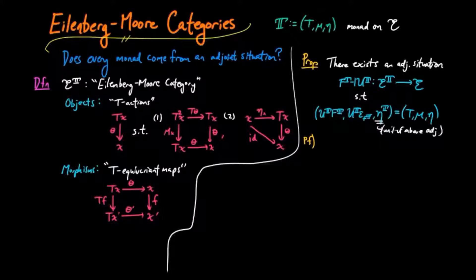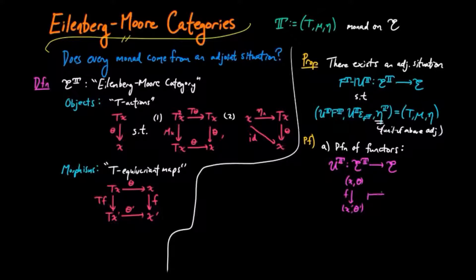Let's first define the functors U^t and F^t. U^t is going to be a functor from e^t to e. We take a t-equivariant map in the Eilenberg-Moore category from (x, theta) to (x', theta') and just forget the t-action. This is the forgetful functor.